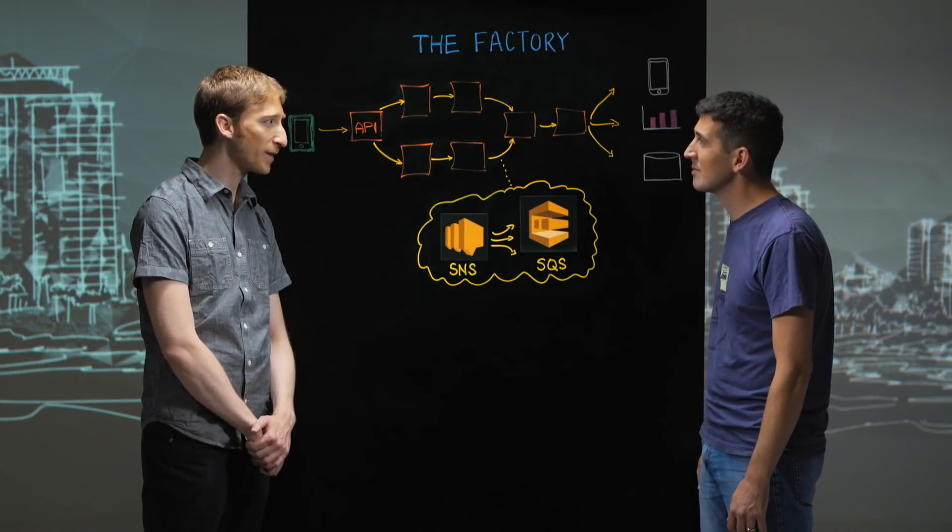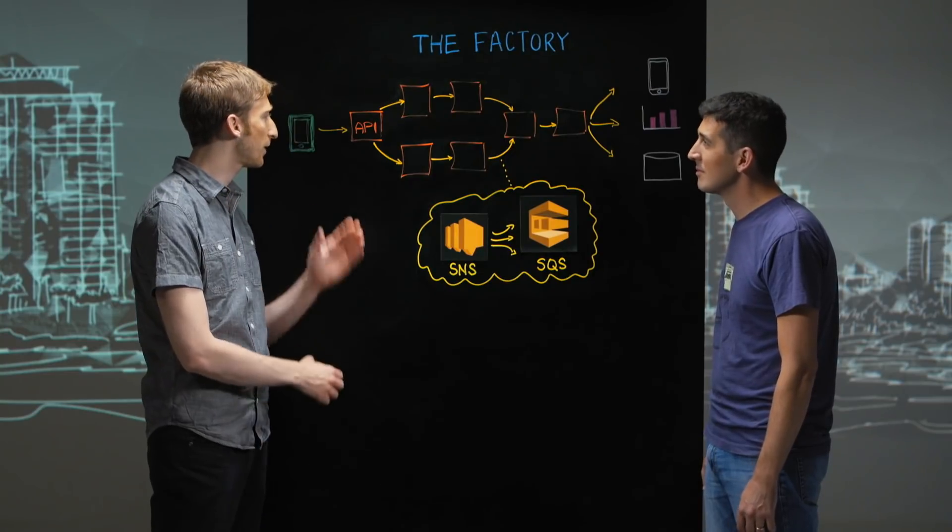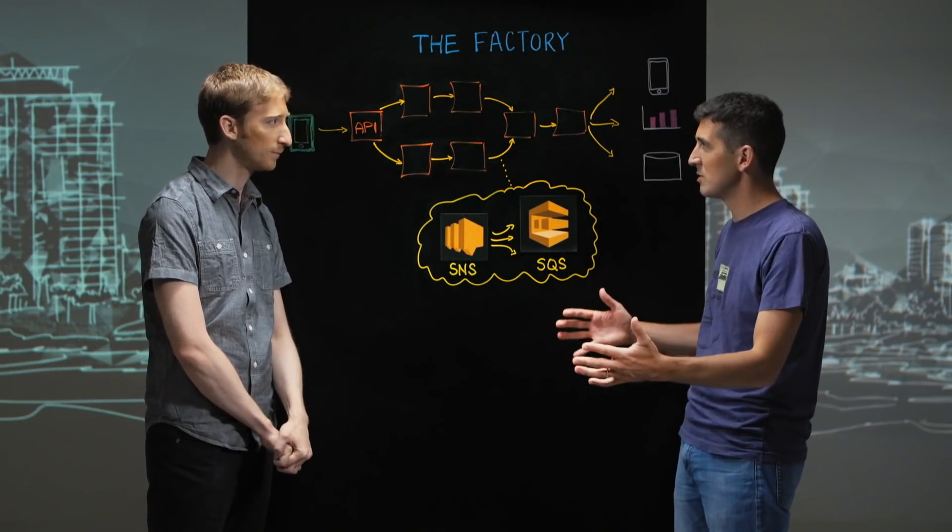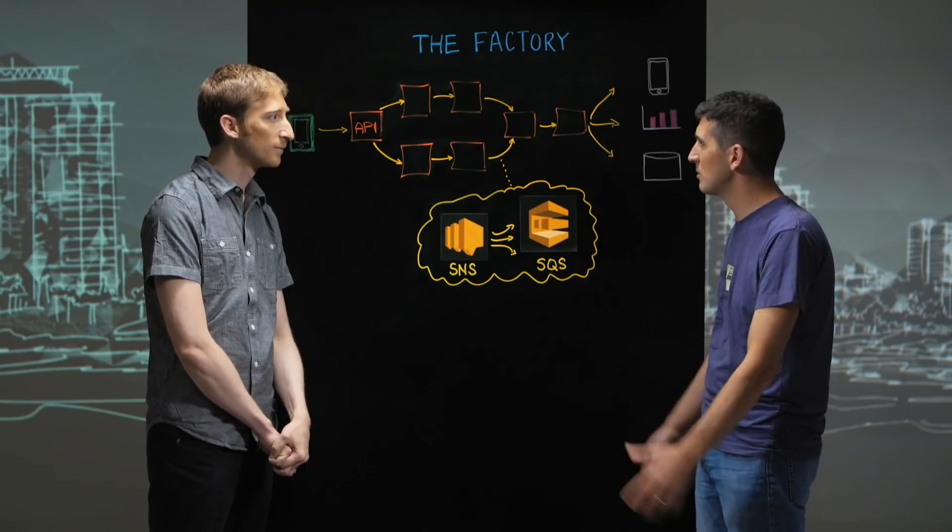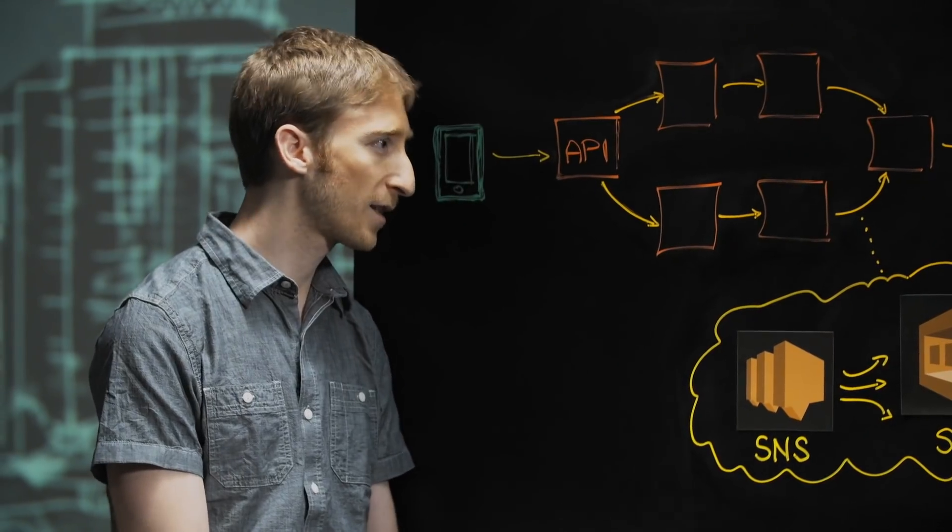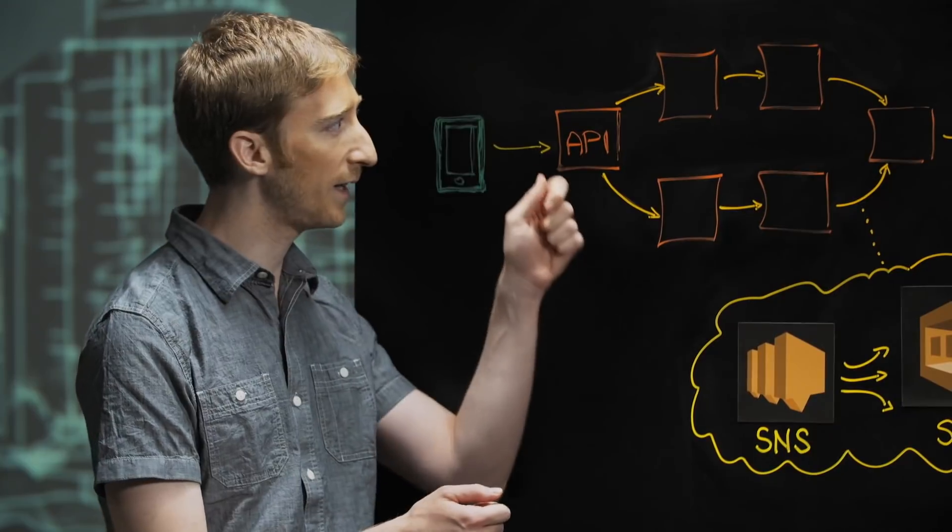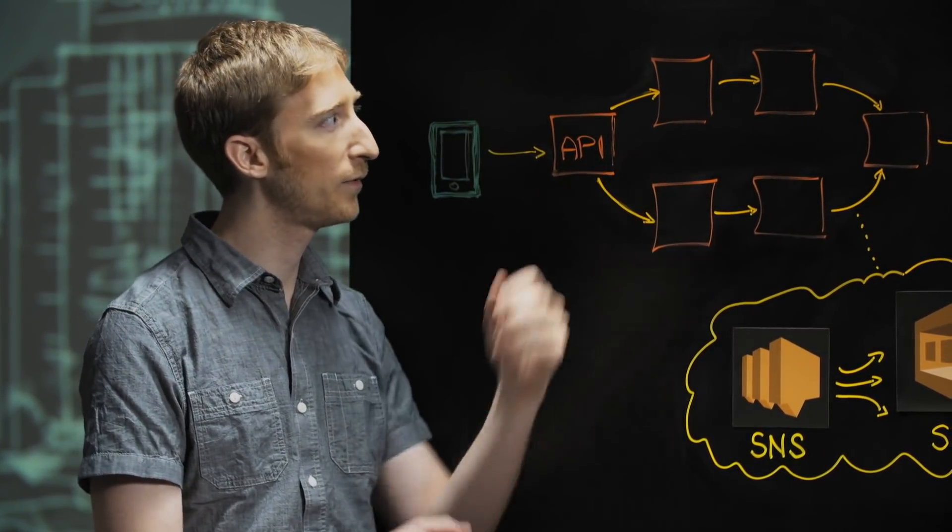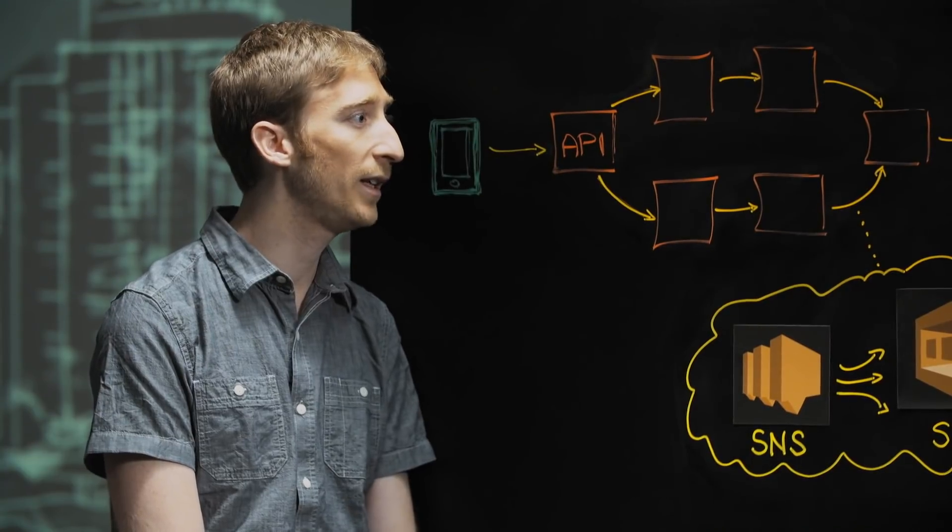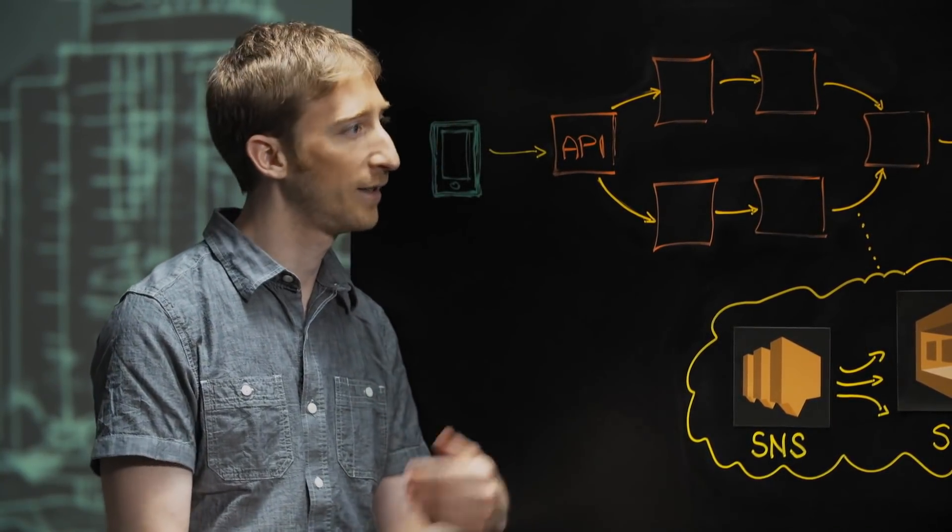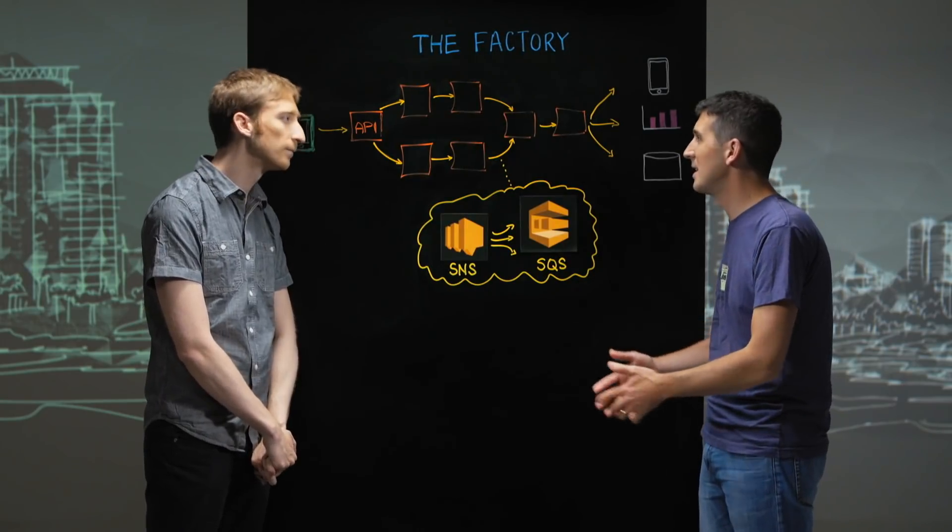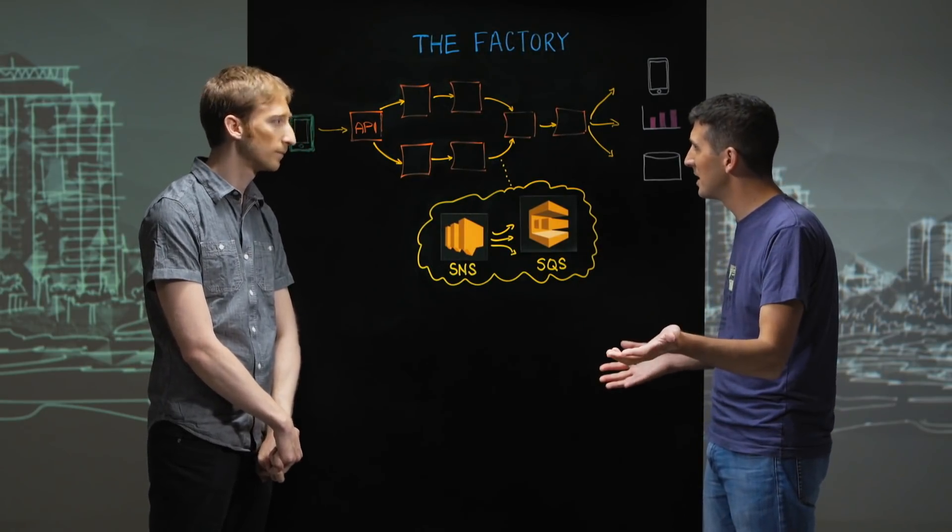So at Trax we digitize the physical world of retail. We take images of shelves and we transform them into data. Okay, so when you say shelves, what do you mean? Like stores, warehouses? What are you talking about? So one of our customers gets into a supermarket, they take images of shelves and then we transform them into business metrics. For example, how many missing products are there, etc. Okay, yeah, that makes sense. So you want to see what your stock is like, what products are placed where. Exactly.